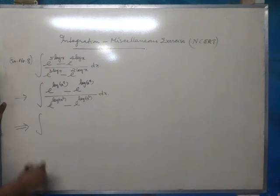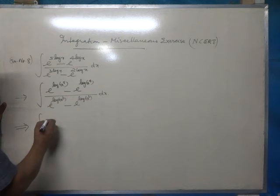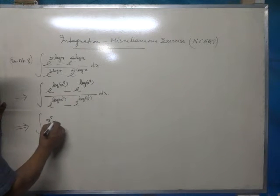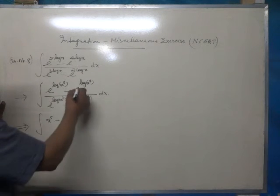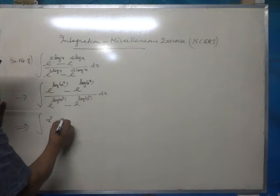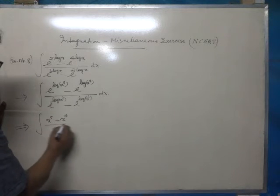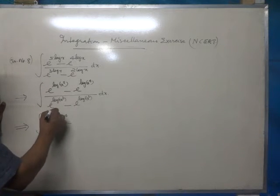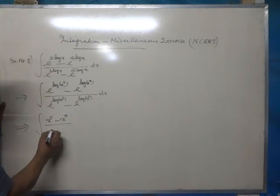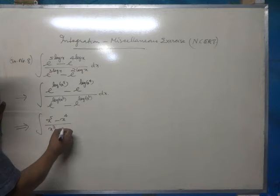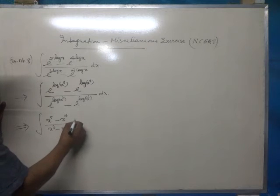Now, integral e raised to log x raised to 5 minus e raised to log x raised to 4 is x raised to 4, divided by e raised to log x cubed is x cubed and e raised to log x squared is x squared dx.